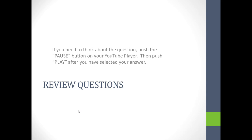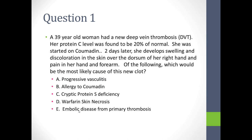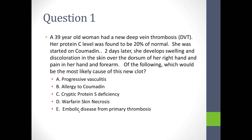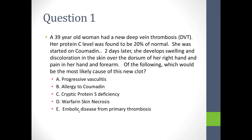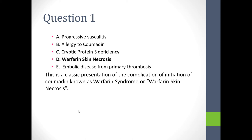Review question one: A 39-year-old woman has a new DVT. Her protein C level was 20% of normal. She was started on coumadin. Two days later she developed swelling, discoloration of the skin over the dorsum of her right hand, and pain in her hand and forearm. The most likely cause is warfarin skin necrosis — a classic presentation of the condition.